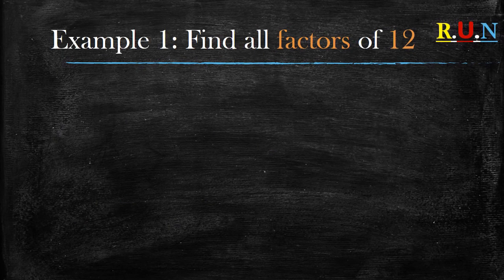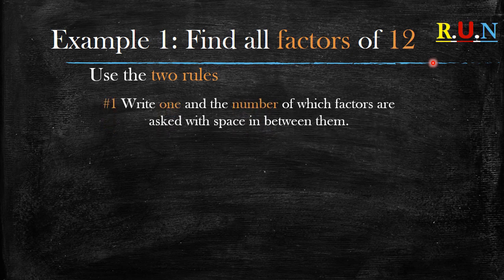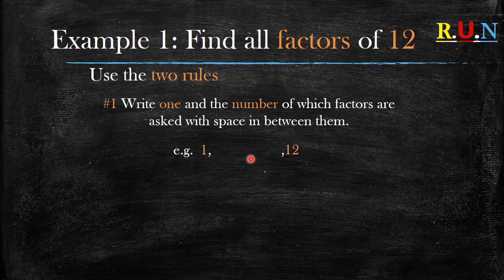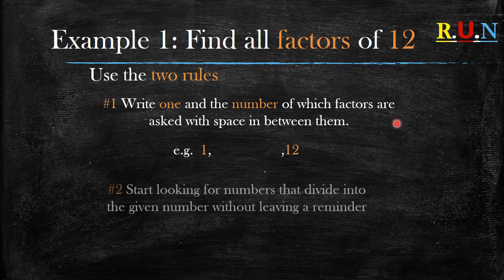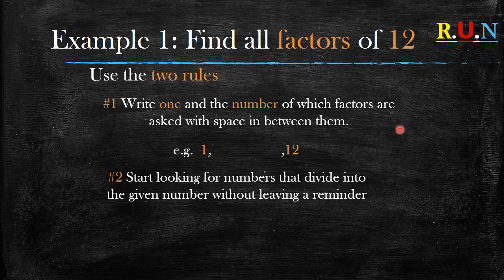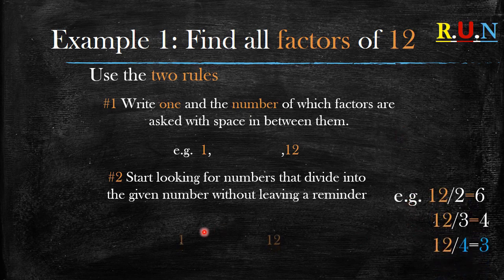Example number one: find all factors of 12. We're going to be using two rules. Rule number one: write one and the number of which factors are asked, with a space in between them — so write one, then space, then the number asked, which is 12 in this case. Rule number two: start looking for numbers that divide into the given number without leaving a remainder.